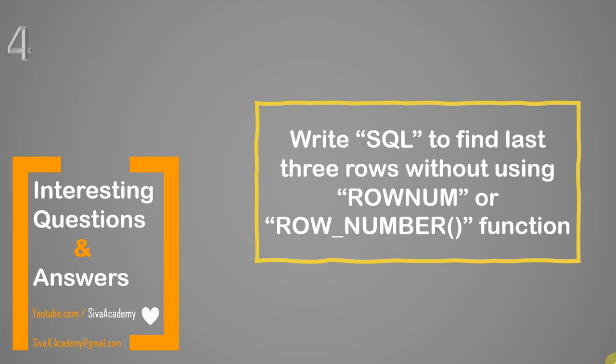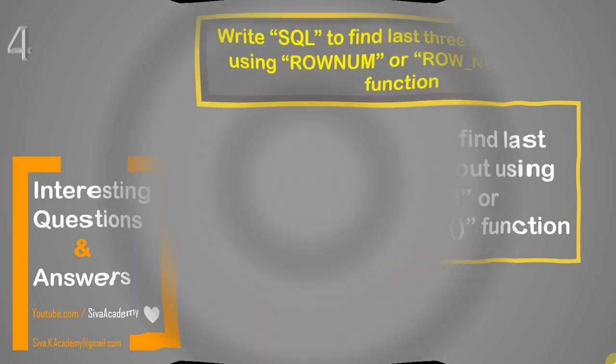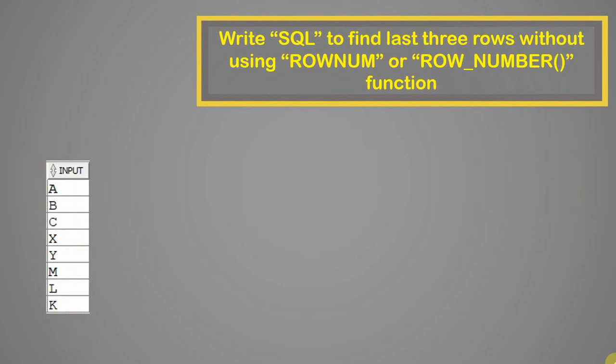Hello friends, welcome to the video series on interesting questions and answers in SQL and PL/SQL. Here is another question I have received from one of the subscribers. The question is how to find the last three records from a table without using ROWNUM or ROW_NUMBER analytical function. Let us first see how to implement using ROWNUM and ROW_NUMBER, then I will show you how to implement the same functionality without using them.